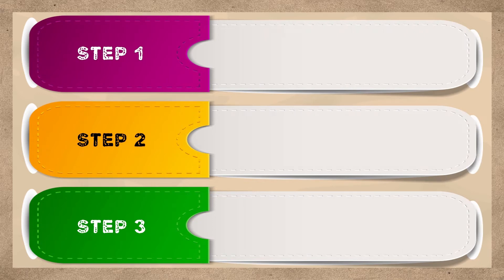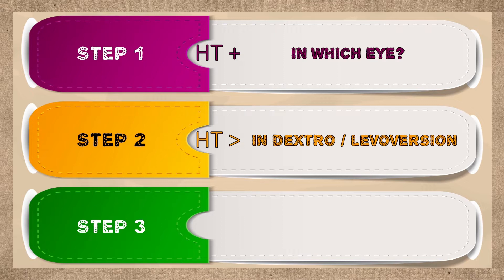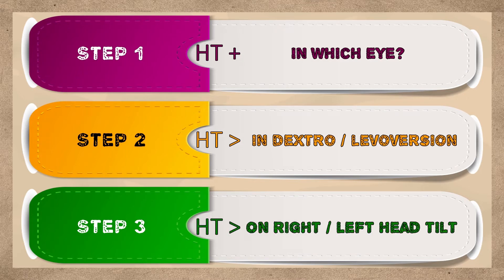Step 1 is to determine the hypertropic eye. Step 2 is to determine whether the hypertropia is greater in right or left gaze, and Step 3 is to determine whether the hypertropia is greater on right or left head tilt.